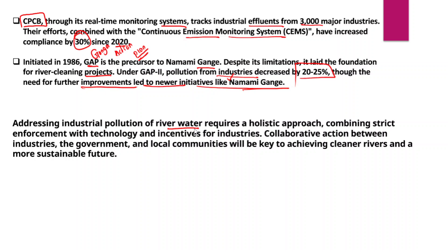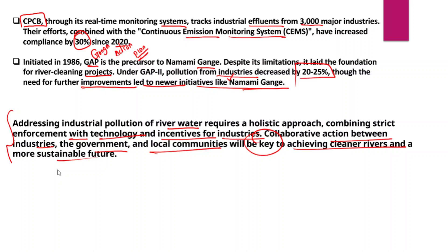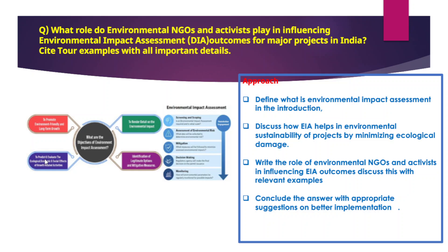Addressing the industrial pollution of river water requires a holistic approach — combining strict enforcement with technology incentives for industries and collaborative action between industries, government, and local communities — which will be key to achieving cleaner rivers and a more sustainable future. You can add more relevant points as needed. The next question is about what role environmental NGOs can play.